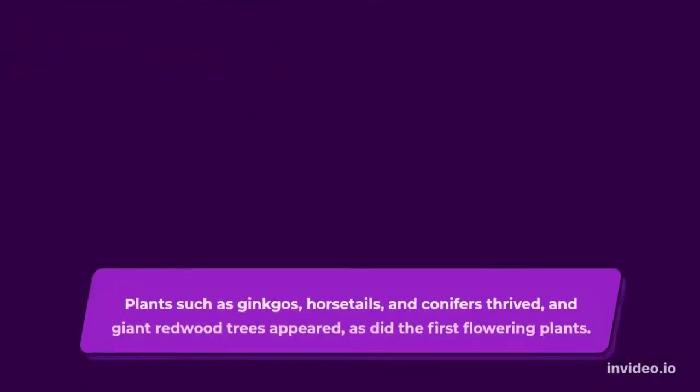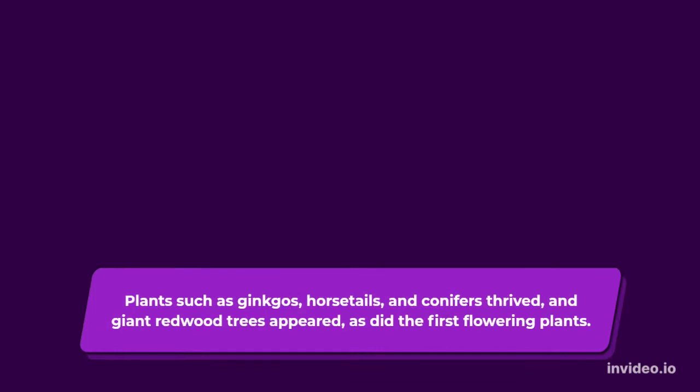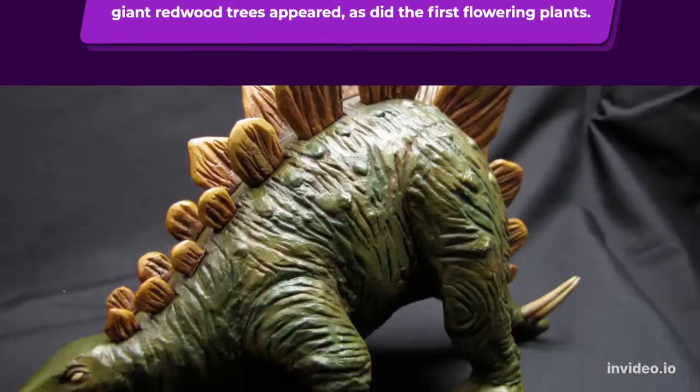The Jurassic climate was warm and moist. Plants such as ginkgos, horsetails, and conifers thrived, and giant redwood trees appeared, as did the first flowering plants.